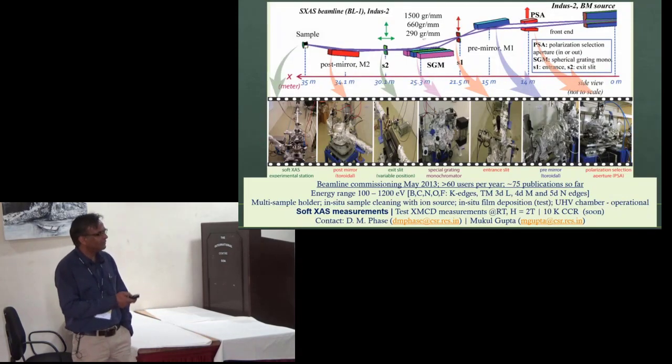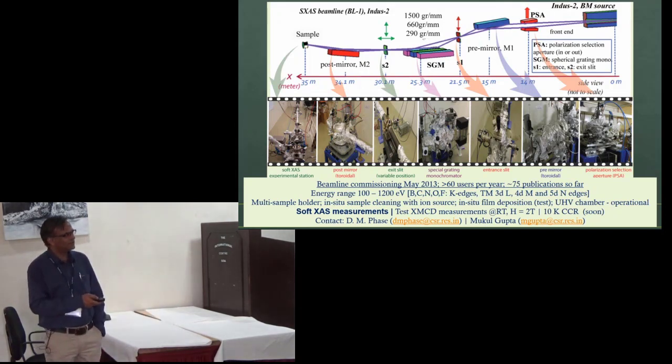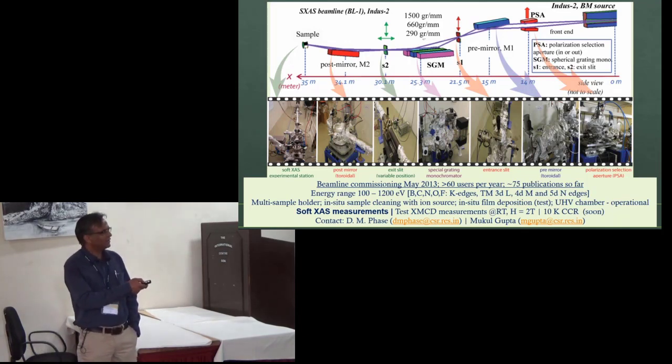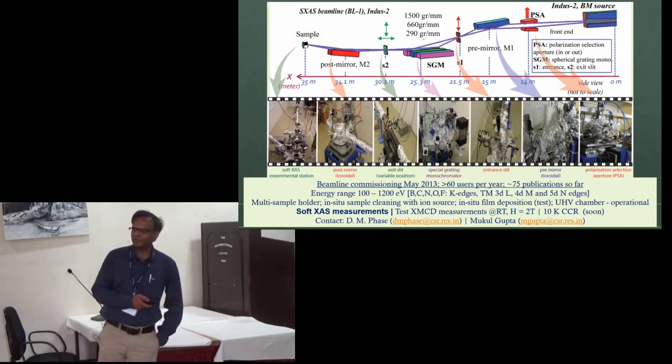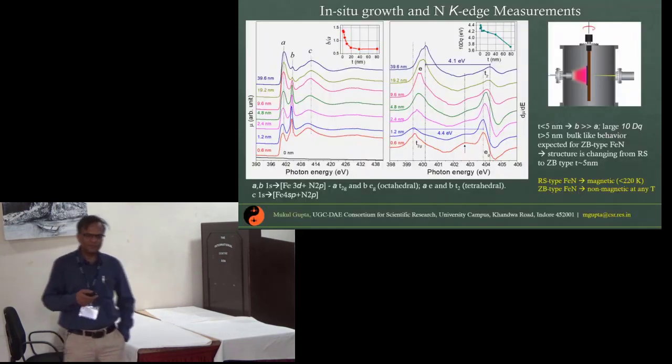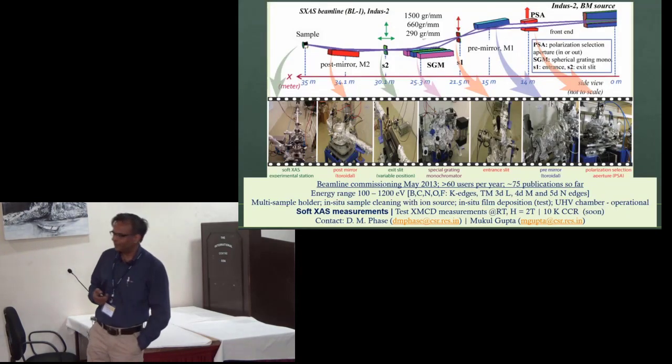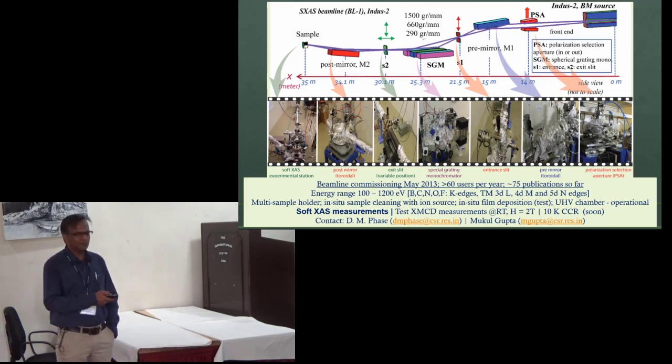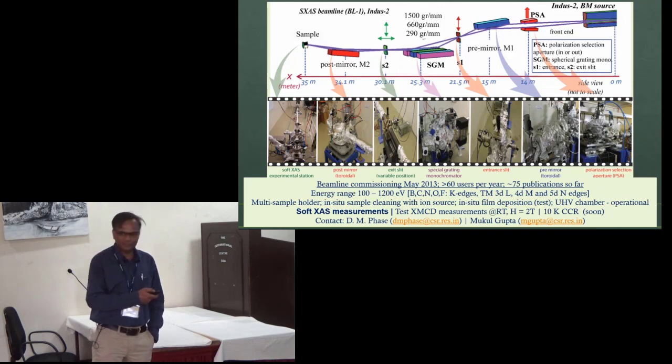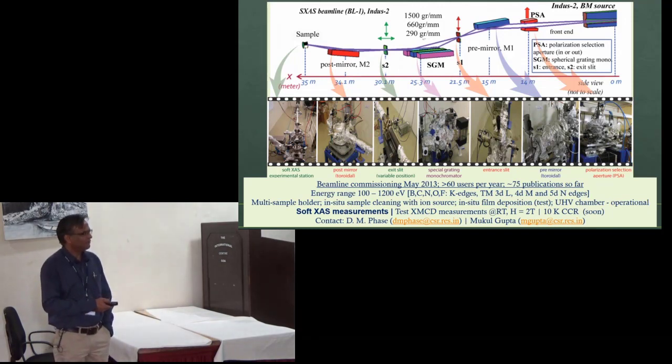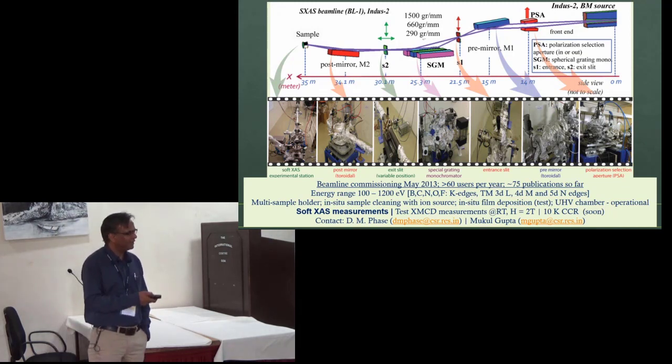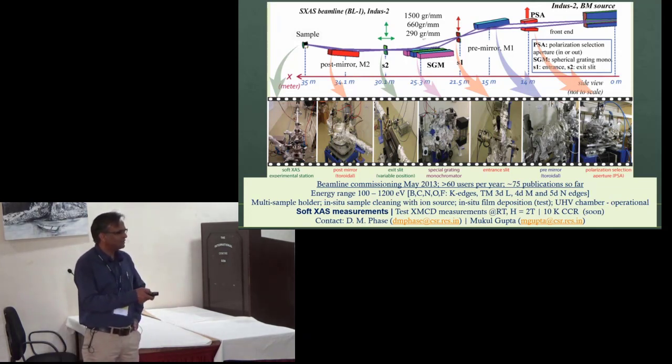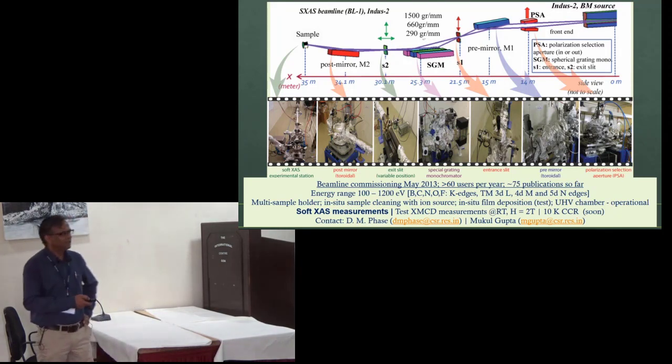This is the beamline that we have developed at Indore. It utilizes synchrotron x-rays ranging from 100 electron volt to 1200 electron volt. You can cover the K edges of all low-Z elements, as well as the L, M, or N edges of 3D, 4D and 5D transition metals. It provides useful information about the local structure using nitrogen K-edge absorption spectroscopy. This beamline is already functioning for like 5 years now and used quite heavily, about 60 users per day. Recently we have also done some test XMCD measurements on this beamline.